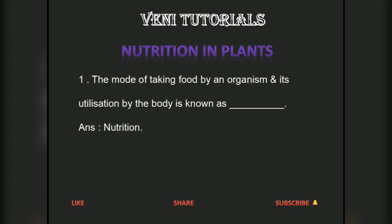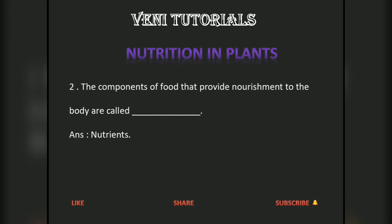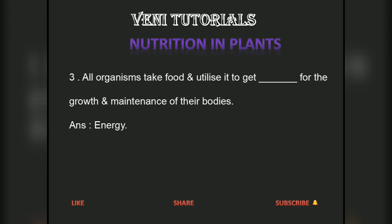The mode of taking food by an organism and its utilization by the body is known as nutrition. The components of food that provide nourishment to the body are called nutrients. All organisms take food and utilize it to get energy for the growth and maintenance of their bodies.